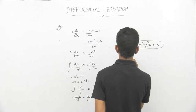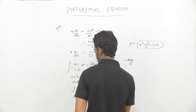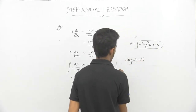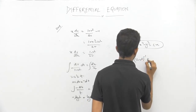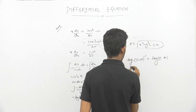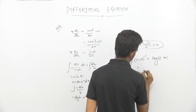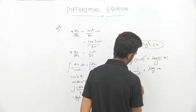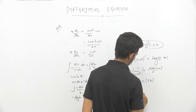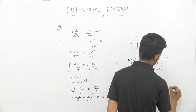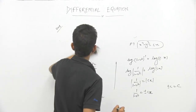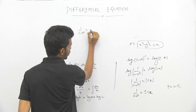Now t = 1 - v². Taking antilog of -log(1 - v²) = log x + log c, we get 1/(1 - v²) = ±cx. Let ±c = C, so 1/(1 - v²) = Cx.